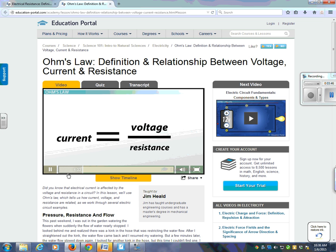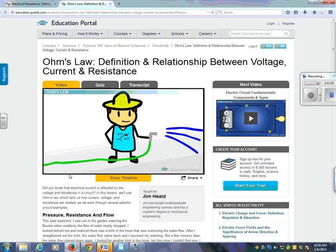If we increase the voltage, then the current will increase. But if we increase the resistance, then the current will decrease. We saw these concepts in action with the garden hose. Increasing the pressure caused the flow to increase. But getting a kink in the hose increased the resistance, which caused the flow to decrease.